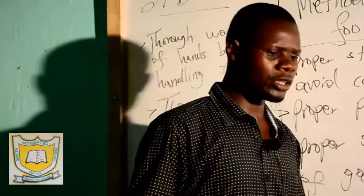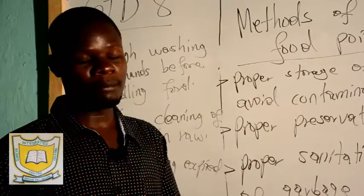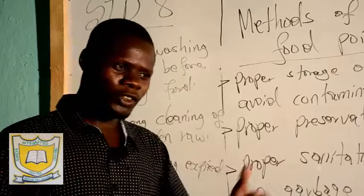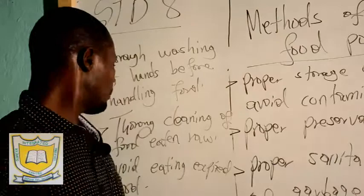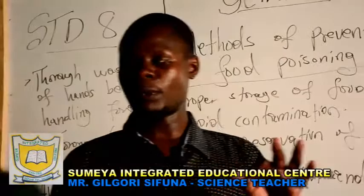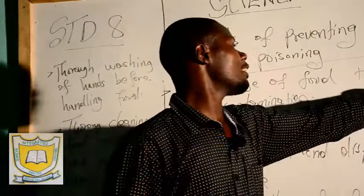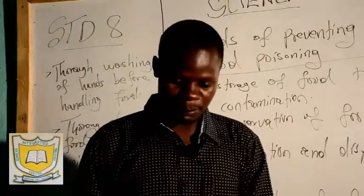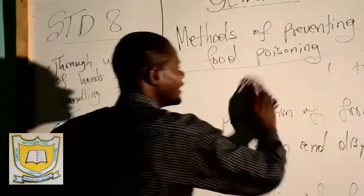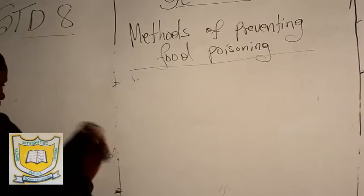Thorough cleaning of food which is eaten raw — some foods like fruits are eaten raw, so make sure you clean them thoroughly before consuming because they might have come in contact with chemicals and microorganisms. Make sure that fruits, carrots, potatoes, or sugarcane that are eaten raw are cleaned thoroughly before you eat them. Avoid eating expired food — some preserved foods have expiry dates, so confirm the expiry date before consuming because it might have expired last year and now it has been poisoned.